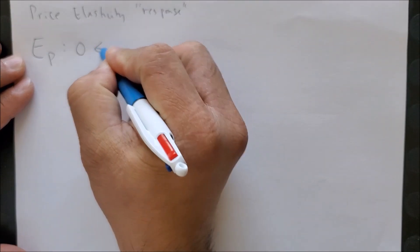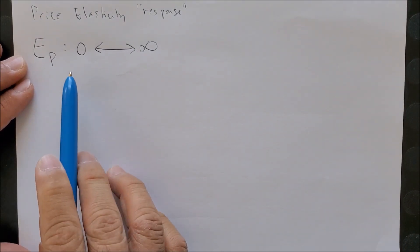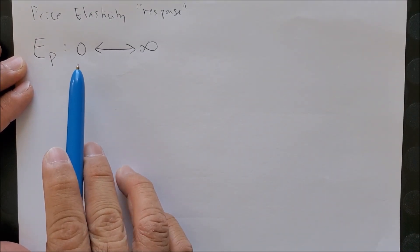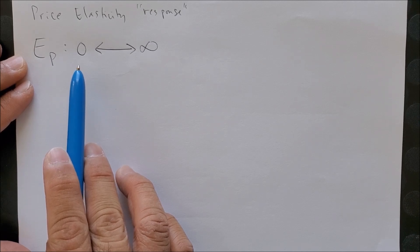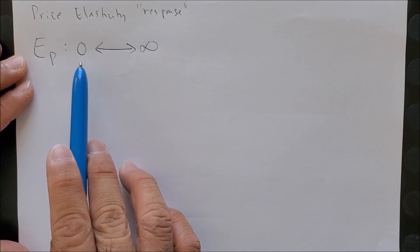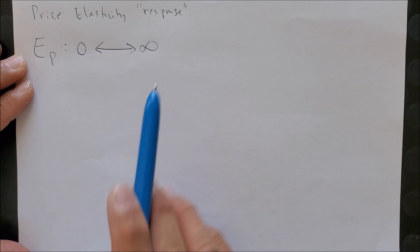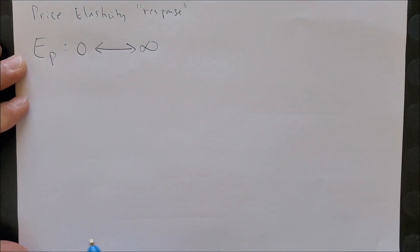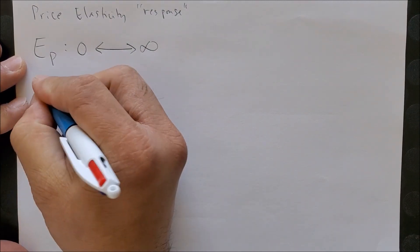We do know that the numbers we are going to calculate will have a range between zero and infinity, which means we can never have price elasticity that is negative because it starts at zero and ends in infinity.